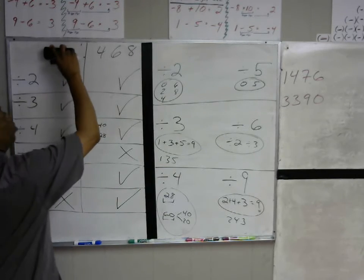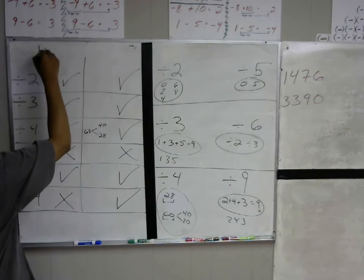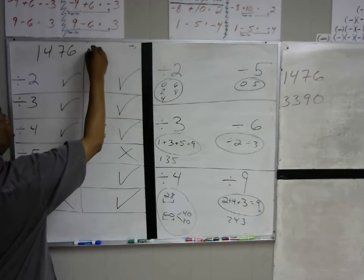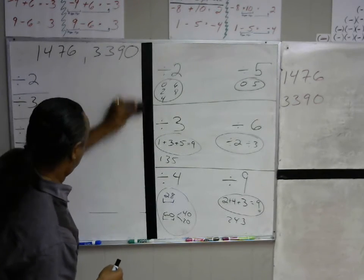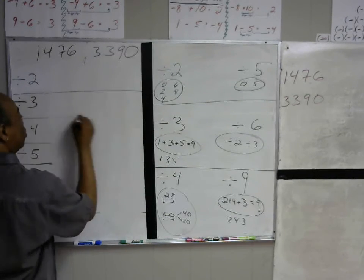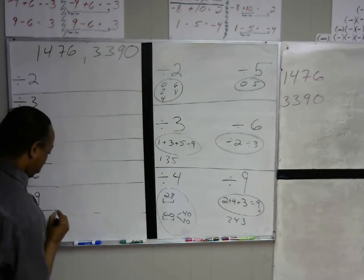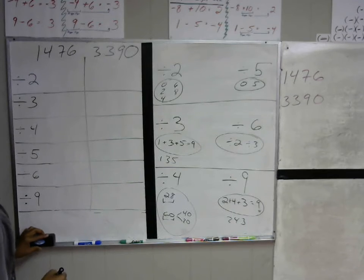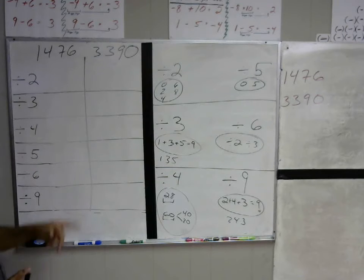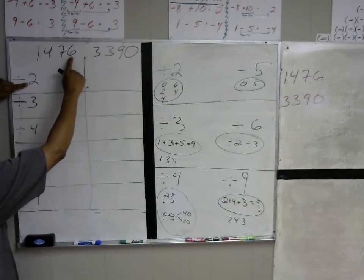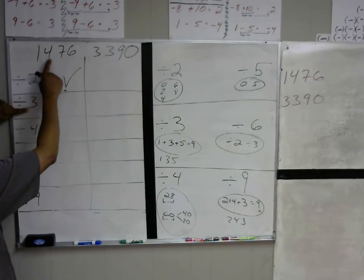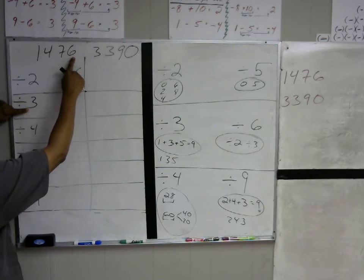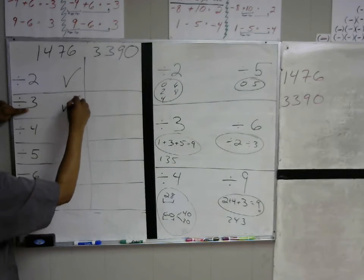Let's take a look at two more numbers: 1476 and 3390. Can 1476 be divided by 2? Yes, because 6 is in the two times tables. Can it be divided by 3? Let's add the digits: 1 plus 4 is 5, then 5 plus 7 is 12, and 12 plus 6 is 18. 18 is in the three times tables, so it can be divided by 3. For 4, we look at the last two digits: 76. I'll break 76 into 40 and 36 — both are in the four times tables, so this can be divided by 4.